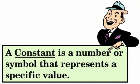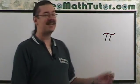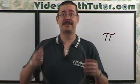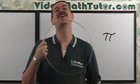A constant is a number or symbol that represents a specific value. The value of pi is the most well-known mathematical constant. It really just represents the number of diameters that fit on the circumference of a circle.